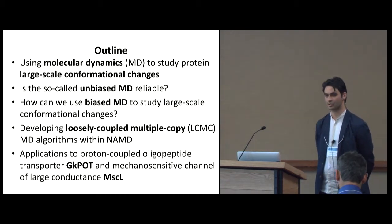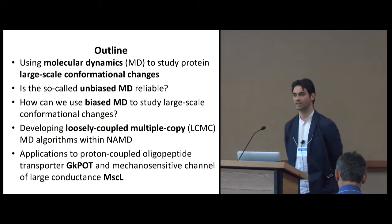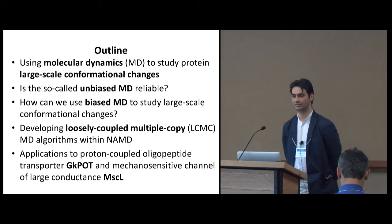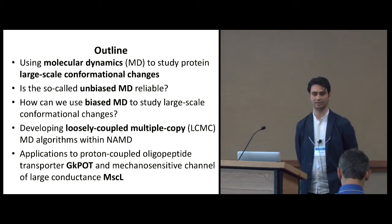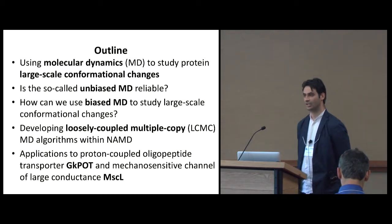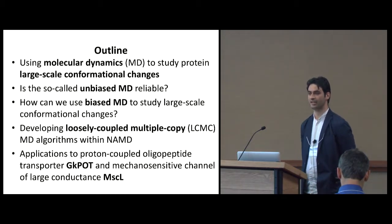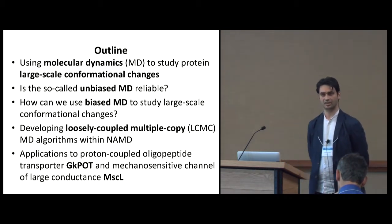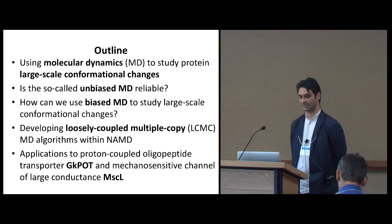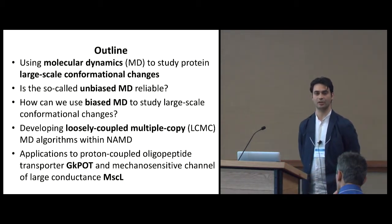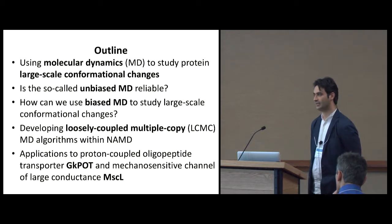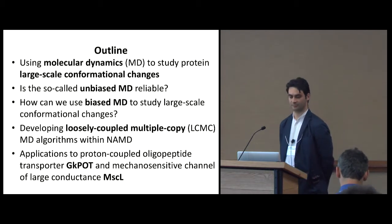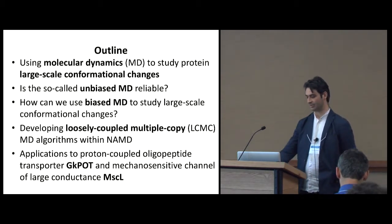After a brief introduction, I will first discuss a case study showing that what is usually called unbiased molecular dynamics is not very reliable, and then show how we can use biased molecular dynamics — specifically loosely coupled multiple-copy algorithms and enhanced sampling techniques — with some applications.